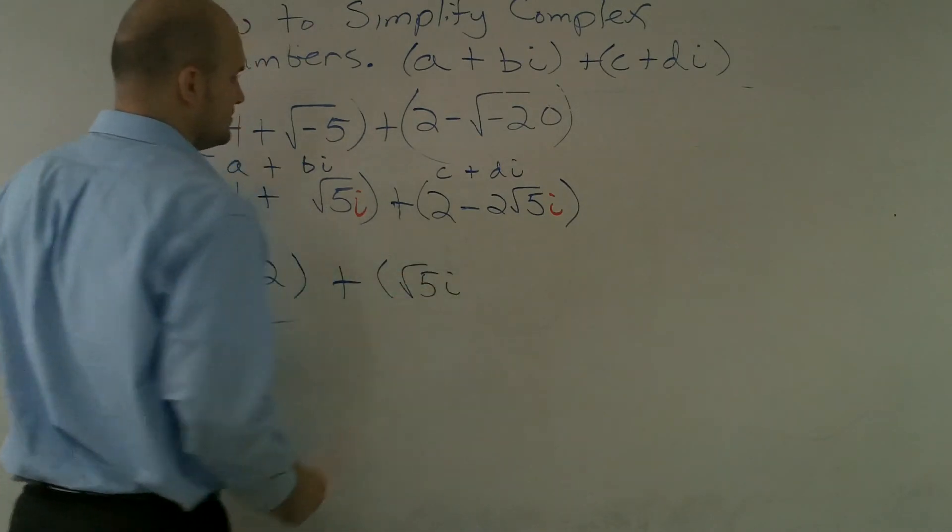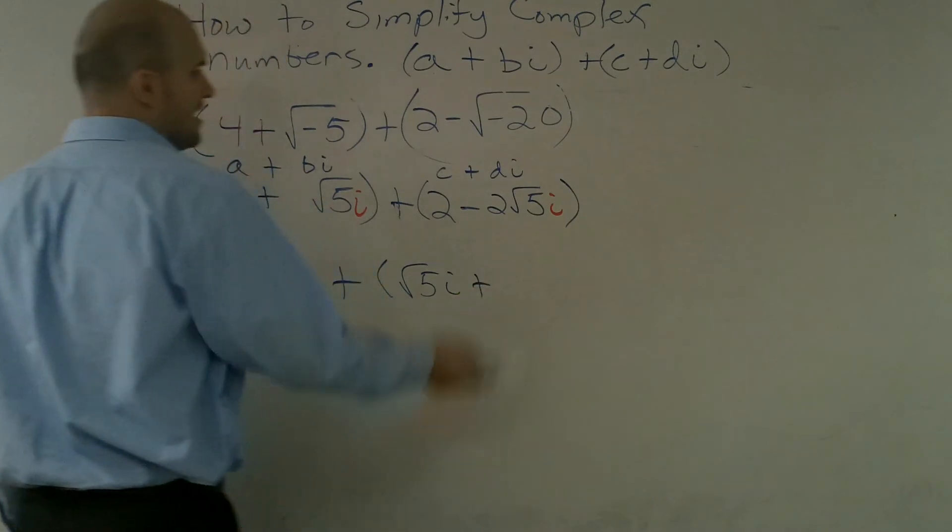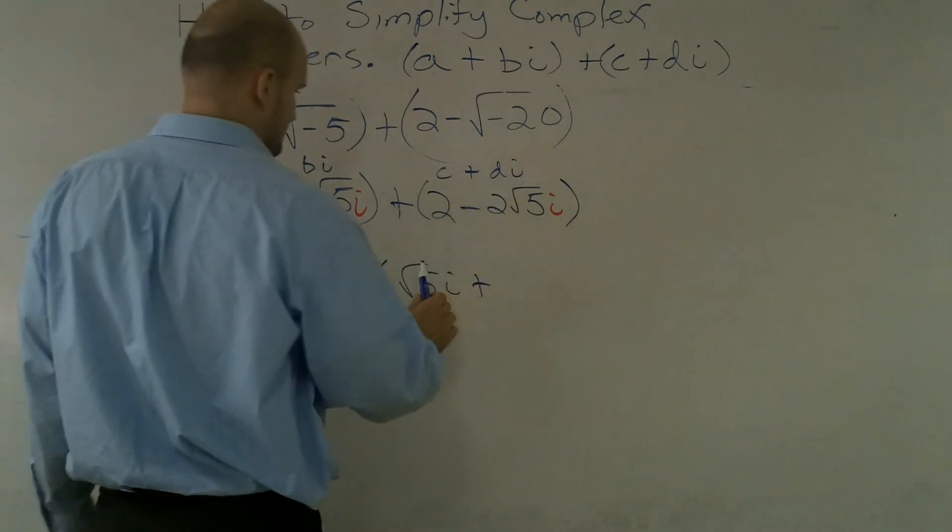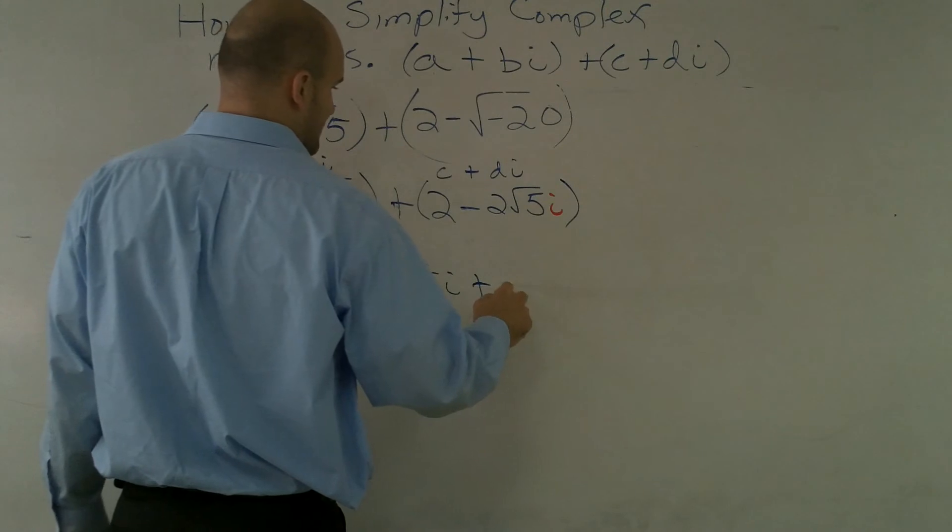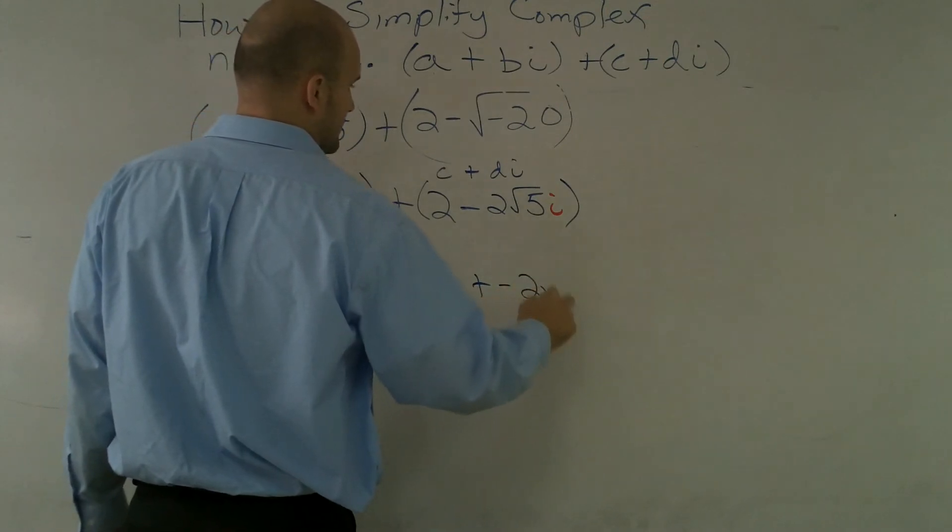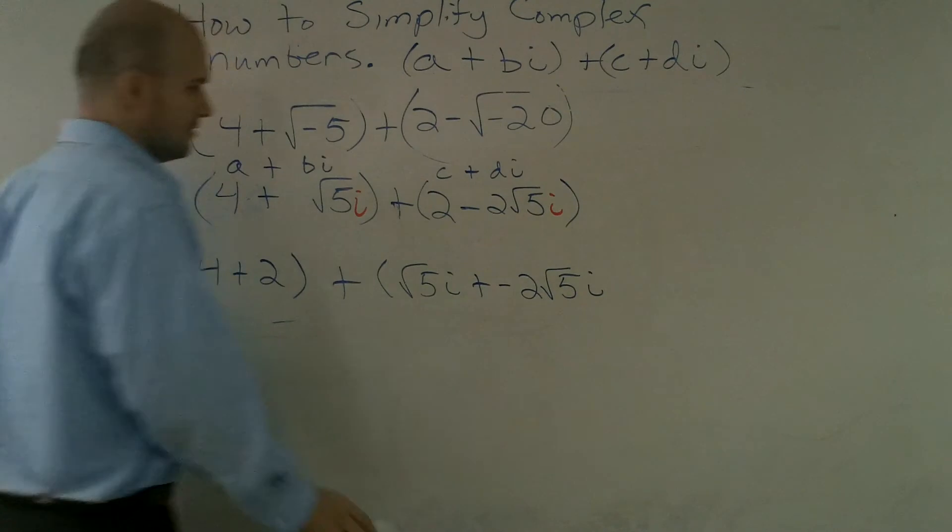Then I'm going to add these two: √5i plus, and if you notice, this is a negative, negative √5.